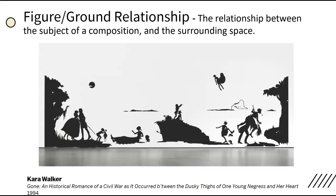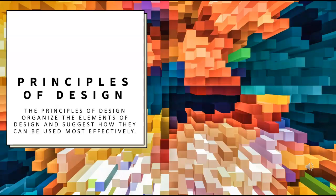Figure-Ground Relationship is the relationship between the subject of a composition and the surrounding space. This large-scale, wall-sized paper-cut mural by contemporary artist Kara Walker emphasizes the relationship between positive space — the black paper figures, trees, and land — and the negative space, the plain white background. To create an interesting composition, an artist must create interesting shapes in the negative space as well as the positive space. Throughout this class, as you learn about drawing and design, you can refer back to these principles of design to create the most effective compositions you are able to.